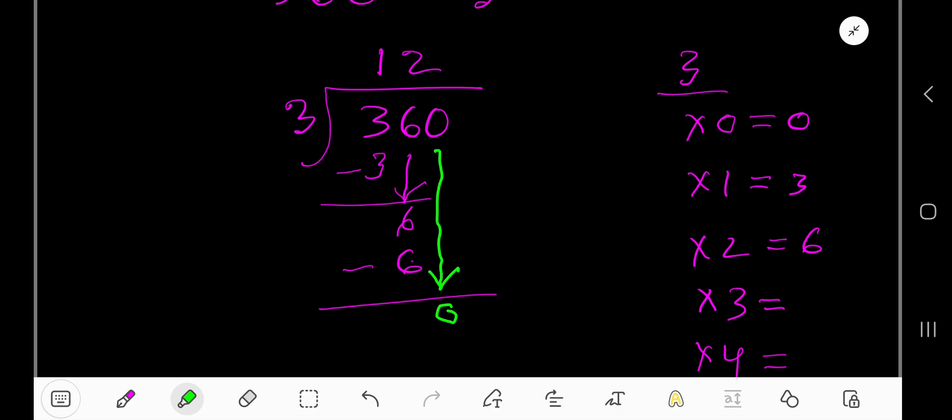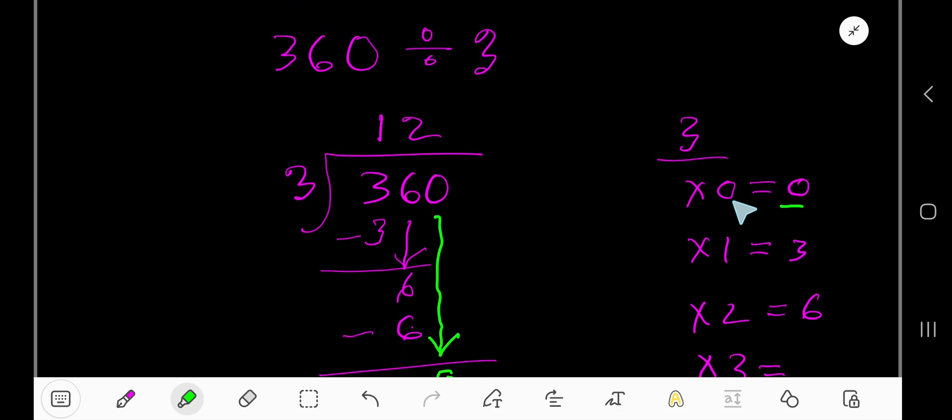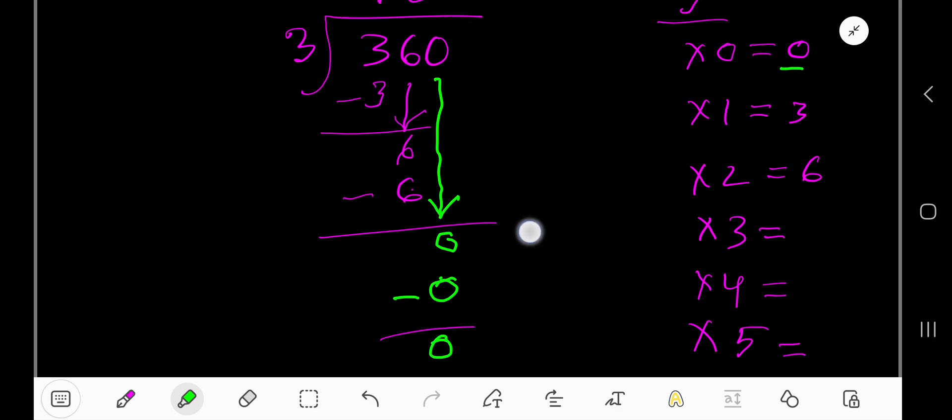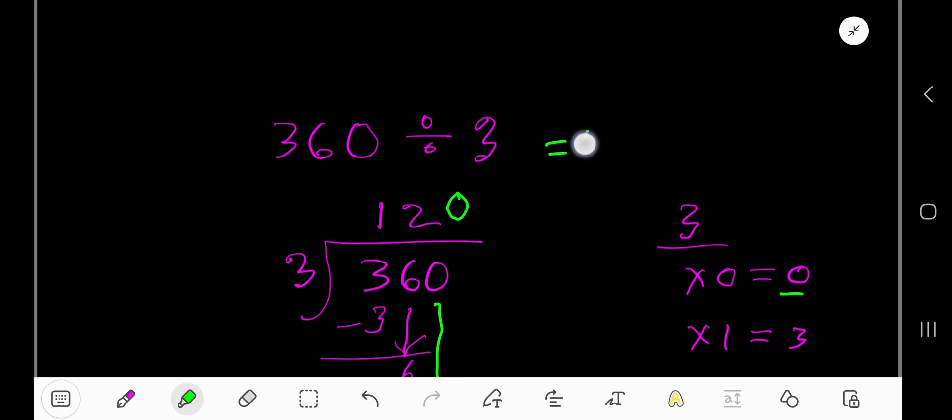3 goes into this 0 how many times? 3 goes into 0, 0 times, right? 0. 0 times 3. That gives you 0. So your result is 120.